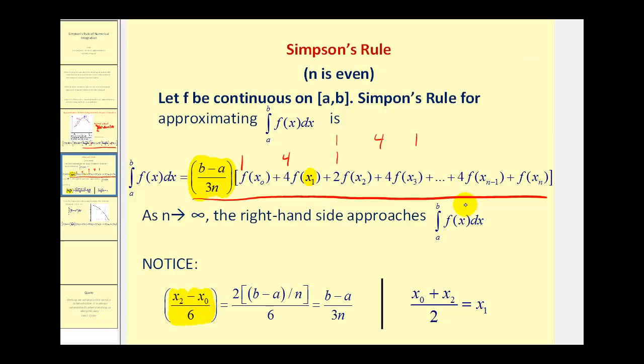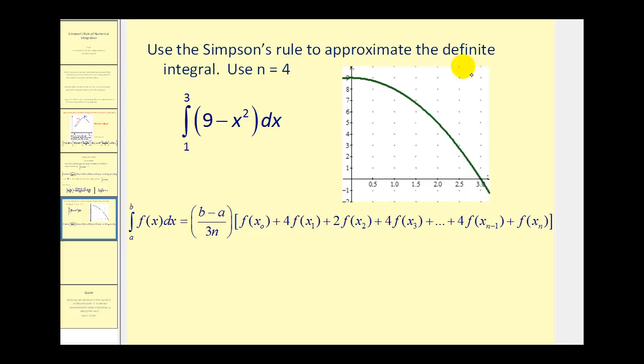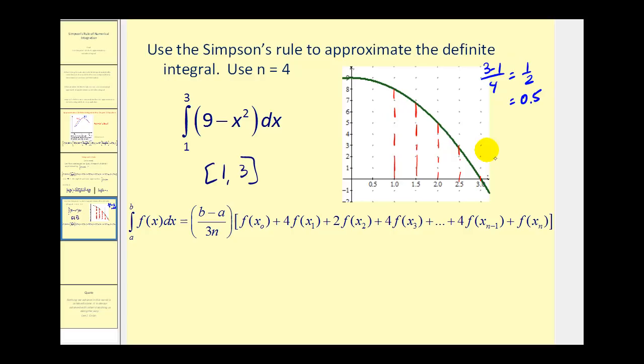Let's go ahead and take a look at an example. We want to use Simpson's Rule to approximate the definite integral where n is equal to four. From our definite integral, the interval is from one to three, so we'll divide it into four equal parts. The width of each interval is b minus a divided by n, which is three minus one divided by four, equal to one half or 0.5. Remember, to use Simpson's Rule, one parabola spans two intervals, so we'd actually be using two parabolas to approximate this definite integral on the interval from one to three.